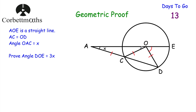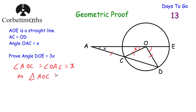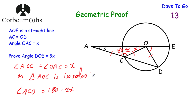Triangle AOC is isosceles because OA and OC are both radii — actually, AC equals OD equals OC, so triangle AOC is isosceles. Therefore angle ACO equals angle OAC, both equal to X. Then angle ACO equals 180 minus 2X, since the angles in triangle AOC add to 180 degrees.